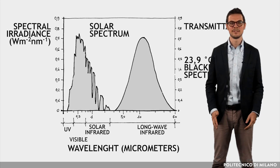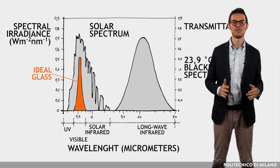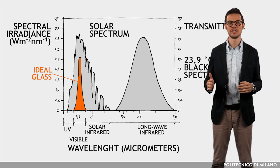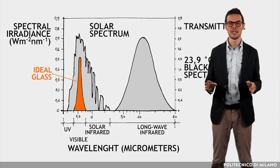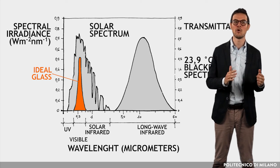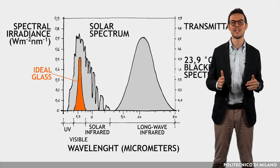It should be noted that the ideal glass should be capable of transmitting mainly the radiation in the visible range, leaving the spectral distribution unchanged, so as to ensure the same color perception that would occur in the absence of glass.